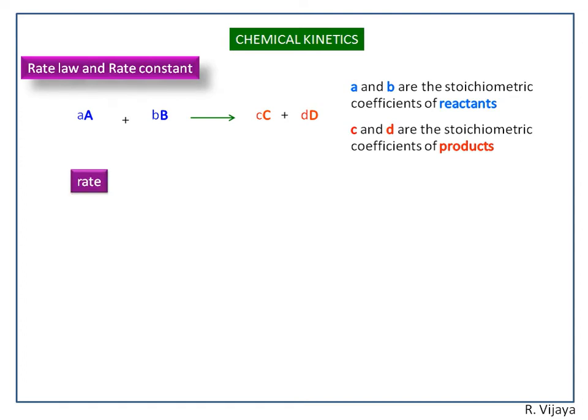Now we write the rate for the above equation. Rate is directly proportional to the concentration of A to the power x, and the concentration of B to the power y. Here, x is equal to small a and y is equal to small b. Sometimes, x is not equal to small a and y is not equal to small b.